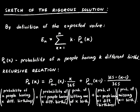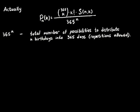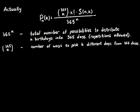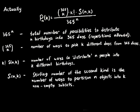You can obtain this recursive relation directly. Using the classical definition of probability, you can write down the following expression for p_{n}(k). The denominator gives the number of ways to distribute n birthdays into 365 days with repetitions. In the numerator, we have the number of ways to pick k different days from 365 days, multiplied by the number of ways to distribute n people into k different birthdays. Note that in the numerator, the Stirling numbers of the second kind appear. The Stirling number of the second kind, by definition, is the number of ways to partition n objects into k non-empty subsets. k-factorial multiplied by S(n, k) gives the number of ways to distribute n different objects into k different boxes.